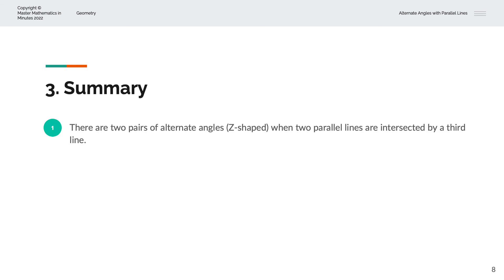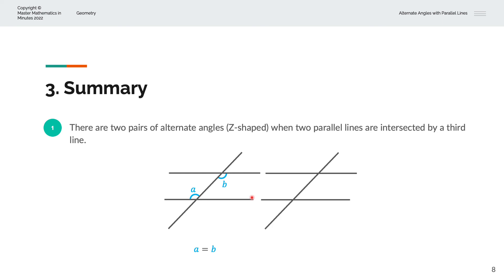To summarise, there are two pairs of alternate angles when two parallel lines are intersected by a third line. If we label one angle as A, the alternate angle is B, and A equals B. The second pair: label one angle as C, the alternate angle is D, and C equals D. Thank you very much for watching. This is Master Mathematics in Minutes.